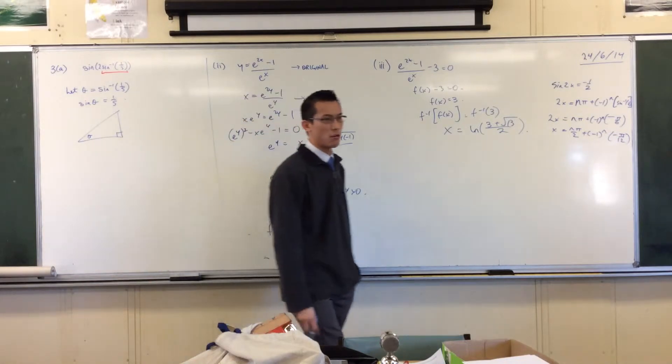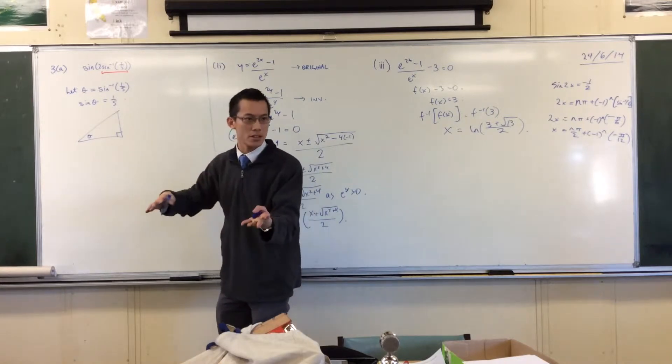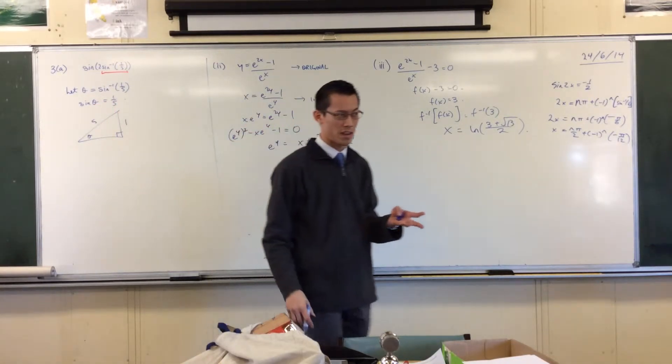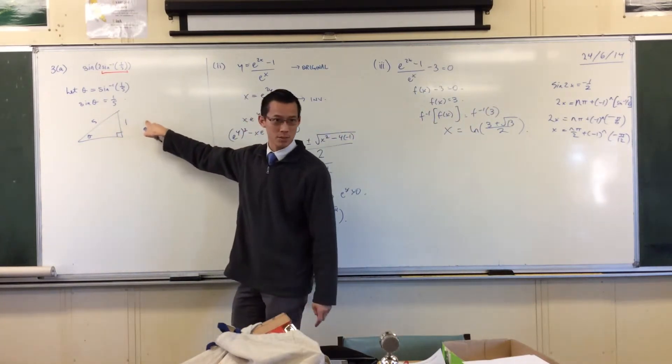What does the one-fifth tell me? What can I label on there? Sine is opposite an iPod, isn't it? So I've got one over five, which from Pythagoras tells you the other side is square root of 24. Five squared minus one squared.